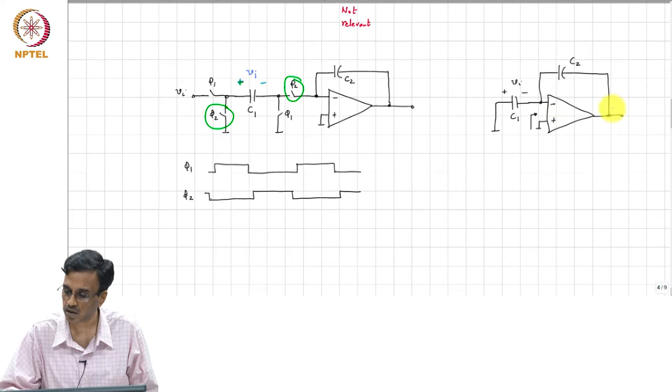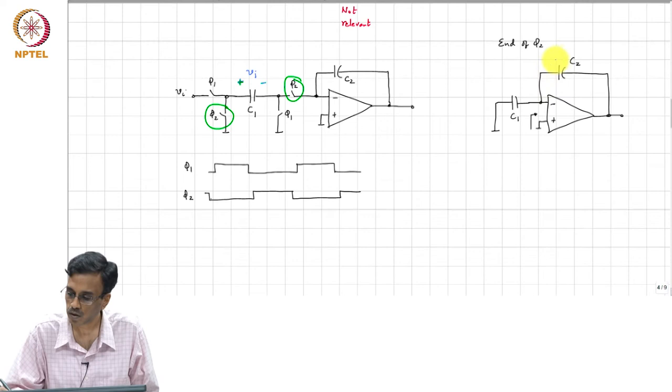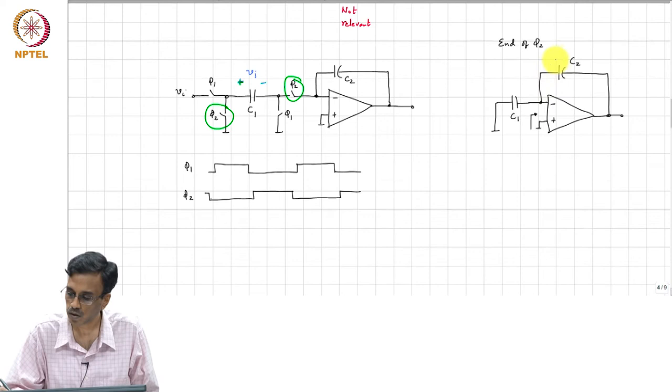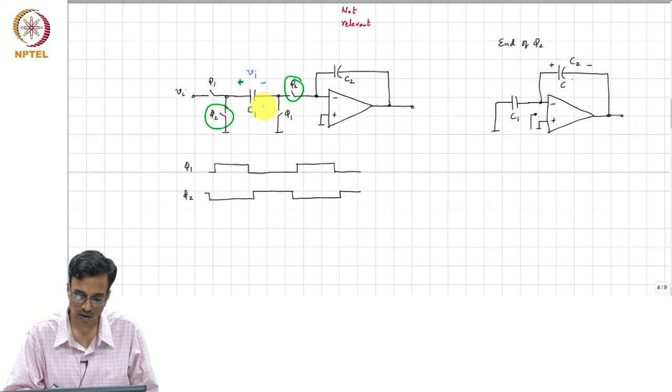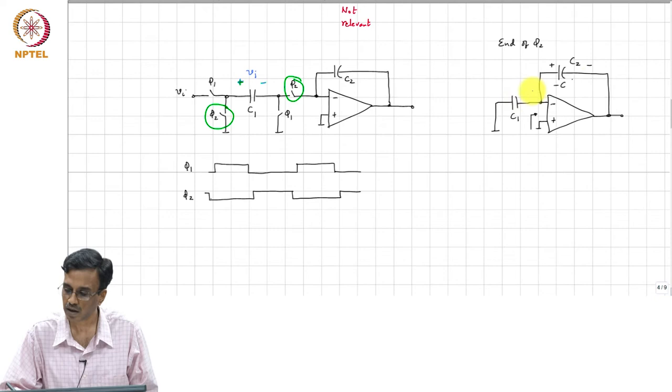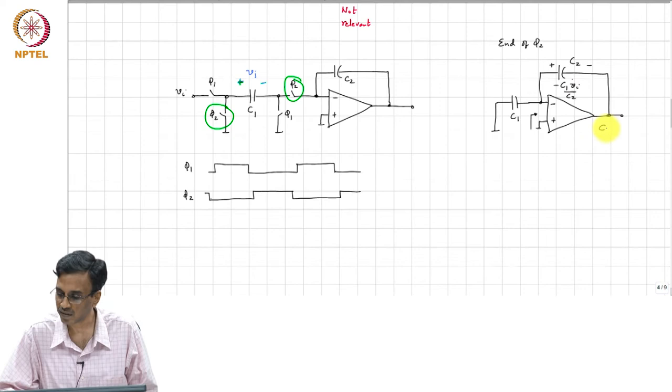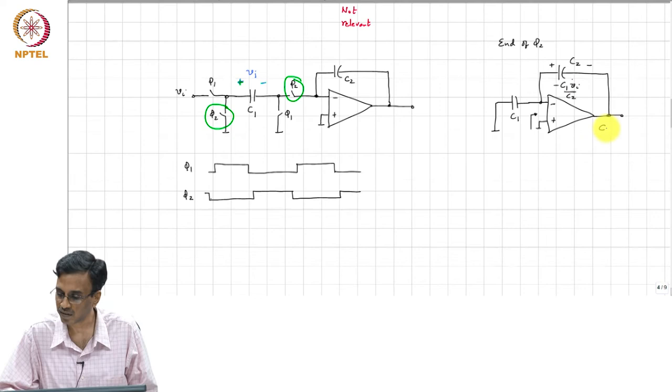So, at the end of phase 2, the voltage, this becomes 0 and the voltage across that capacitance becomes... the charge on this plate was minus C_1 times V_i. So, that is the charge on that plate now and therefore, this becomes minus C_1 V_i by C_2. So, the output voltage will be plus C_1 by C_2 times V_i.